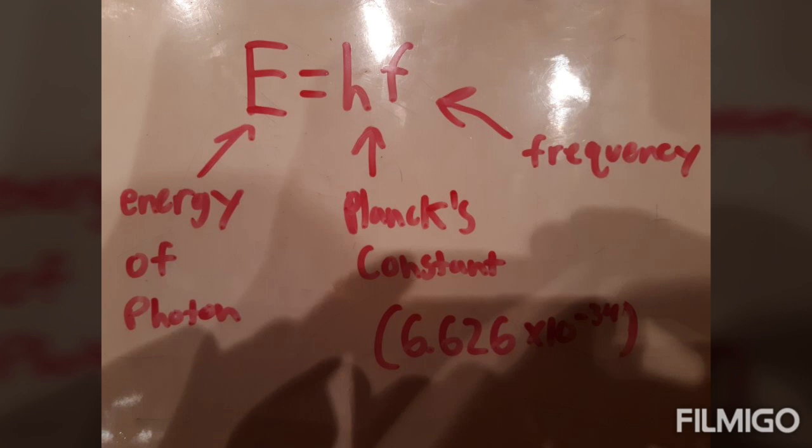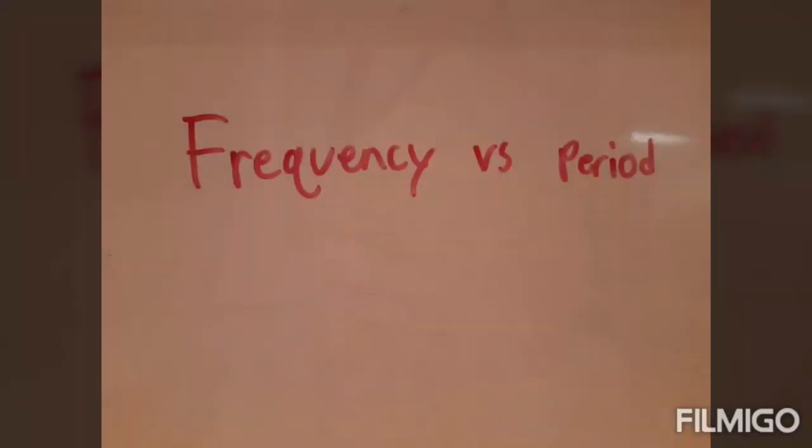Frequency dictates the color of the light and is the rate at which something occurs. Don't confuse frequency with period — period is the time that passes before repeating an action.